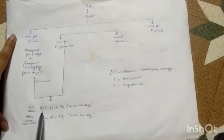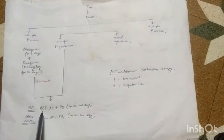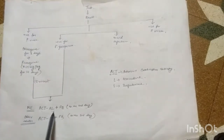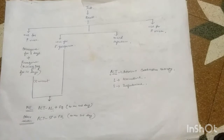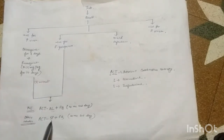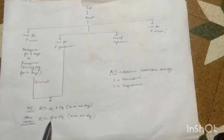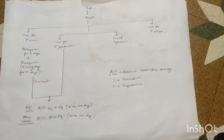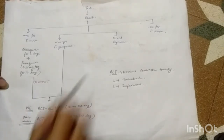So in case of northeastern states, you are going to have the artemisinin combination therapy which includes an artemisinin drug and lumefantrine, and on the second day you give primaquine. Whereas in other states, you give ACT along with SP, that is artemisinin along with sulfadoxine-pyrimethamine, and you give primaquine on the second day.